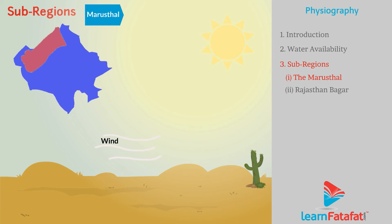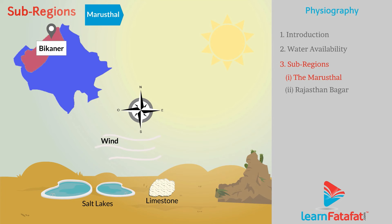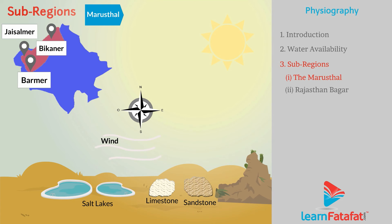There are two salt lakes in Bikaner district. There is a large quantity of limestone and sandstone in the rocky regions of Jaisalmer, Barmer, and Bikaner districts.